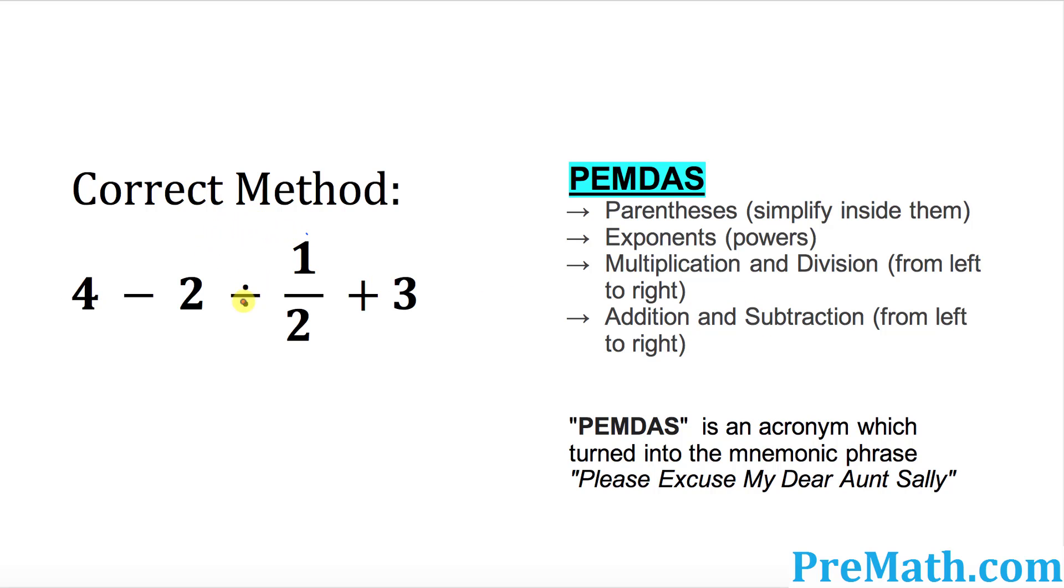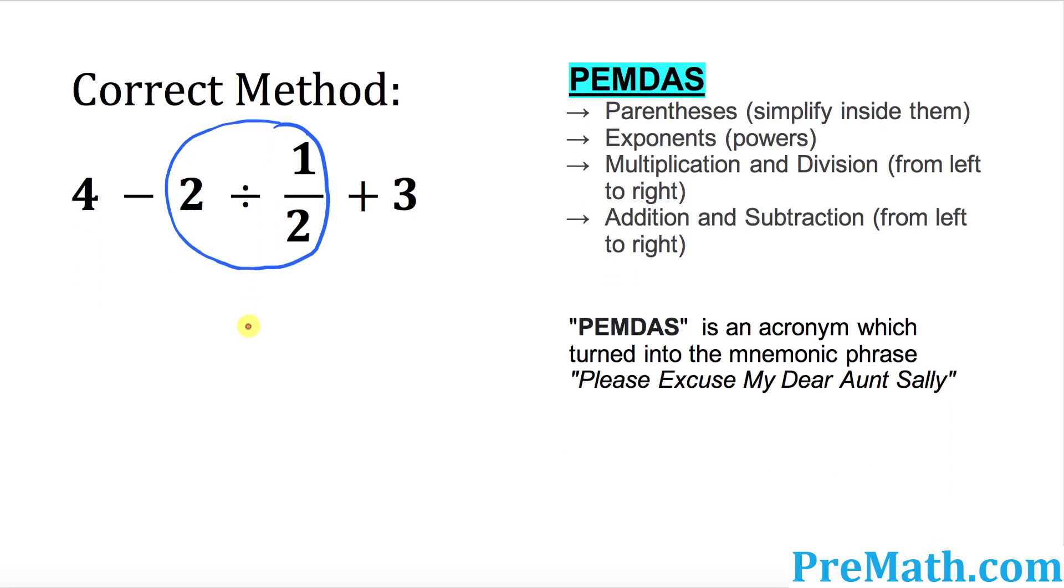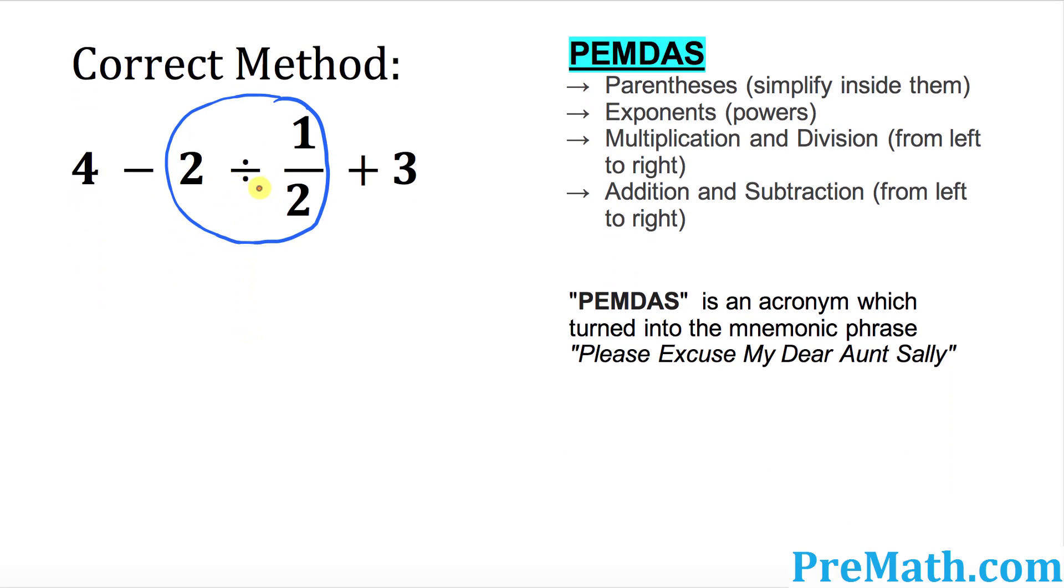So we know that since there is a division over here, we have to take care of that one first. We're going to circle this part. So now two is being divided by a half. Whenever there's a division sign, we're going to convert into a multiplication and this fraction 1/2 would be inverted or flipped as 2/1.